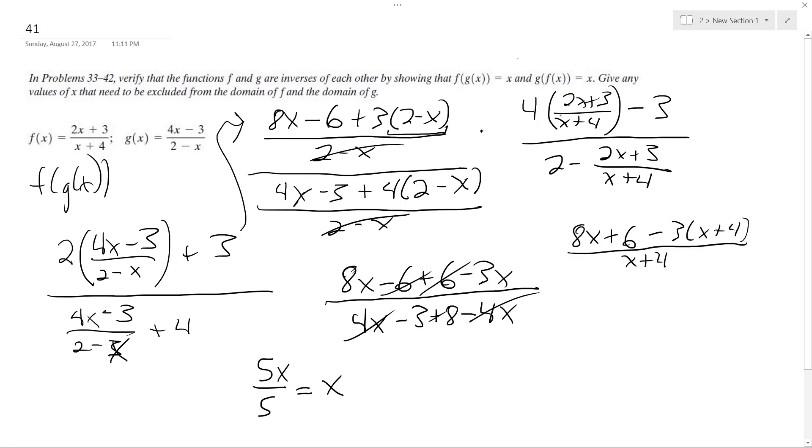So I get 8x plus 6 minus 3 quantity x plus 4 all over x plus 4. And what I did here is I got common denominators. So I have to multiply 3 times that so I get that common denominator. Alright, so I get 2 quantity x plus 4. So I have the common denominator x plus 4, and then minus 2x plus 3. So these cancel out.